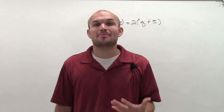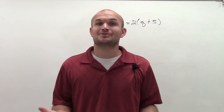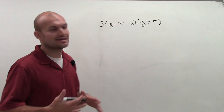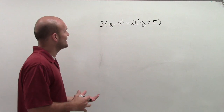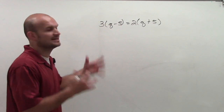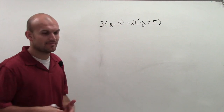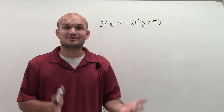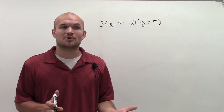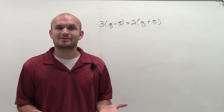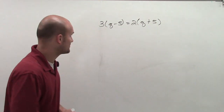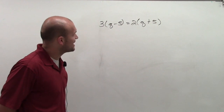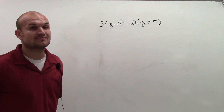Whenever I see a problem like this, where I have an opportunity to do distributive property, I'm going to apply that to get rid of this. Because remember, we have to use our inverse operations to solve an equation. To use inverse operations, we have to see what variable we're solving for. So here what I have is 3 times (q minus 5) equals 2 times (q plus 5).